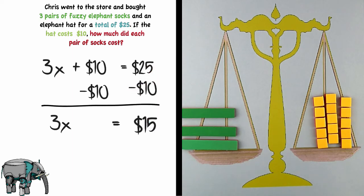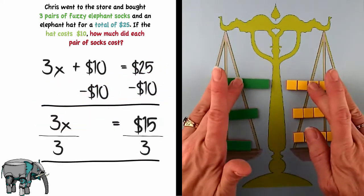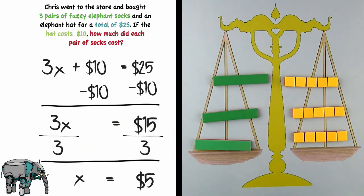To find the value of x I need to divide each side by 3. It is clear with the manipulatives that there are three groups of 5 and it doesn't seem to matter whether I solved it on paper or with the manipulatives. Any way you look at it the socks are $5 a pair.